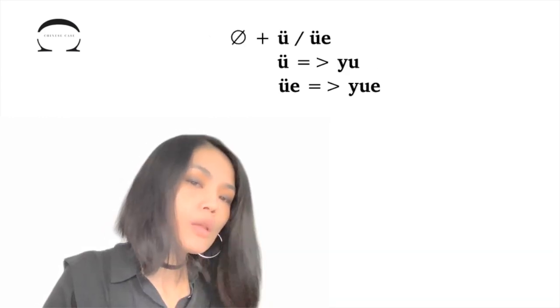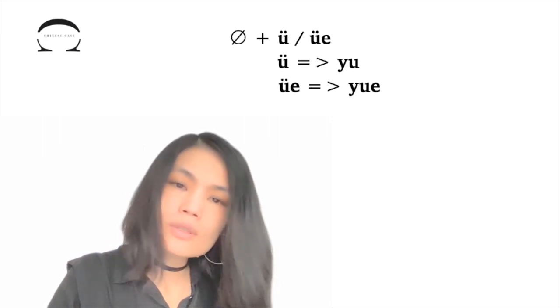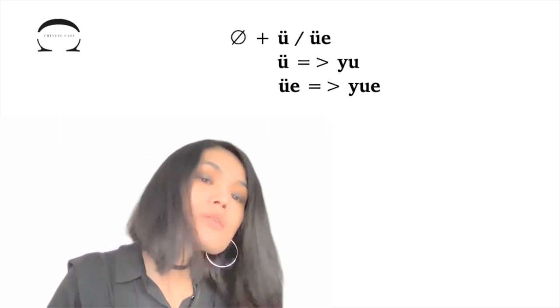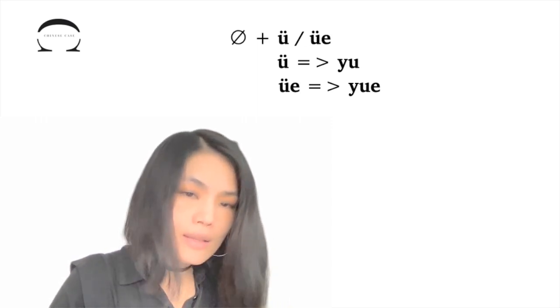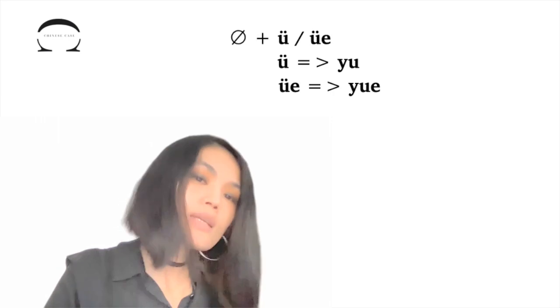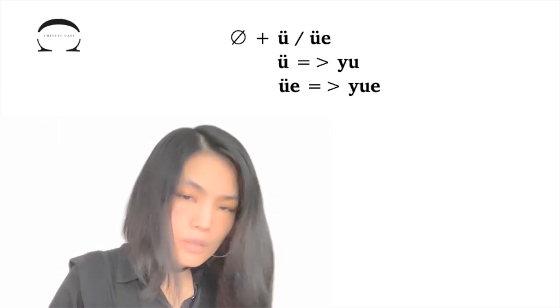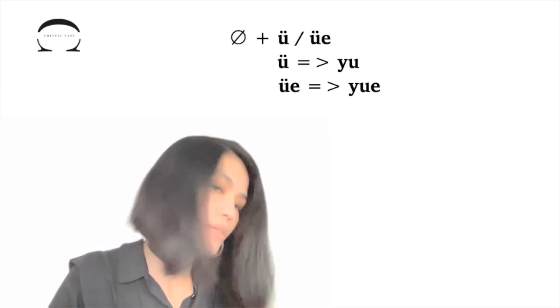When the finals ü and üe pair with the zero initial, in the written form, first the two dots are omitted, and then an extra Y is added at the beginning. Please note that all the changes in the written form do not affect the pronunciation.